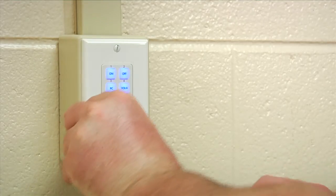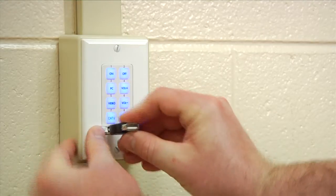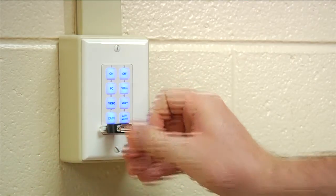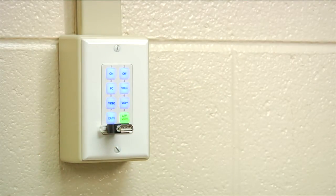First, plug in the USB admin key into the USB port on the front of the controller. You will see button 8 illuminate green to indicate the controller is in admin mode. Once the controller is in admin mode,